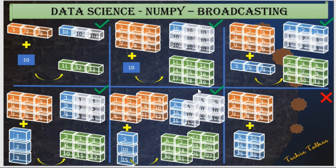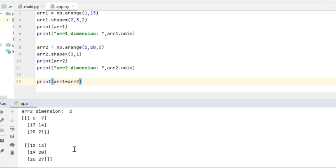Similarly, 7 plus 5 gives 12, and 8 plus 5 gives 13, generating the second 2D array. That is the result we see in the output window.